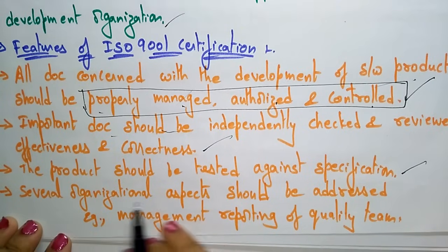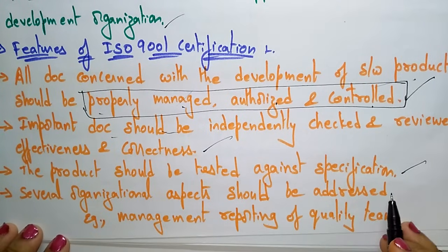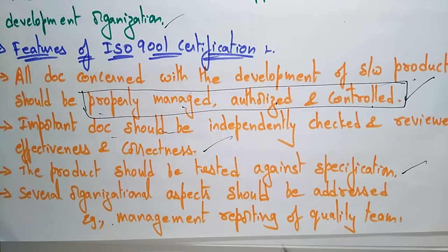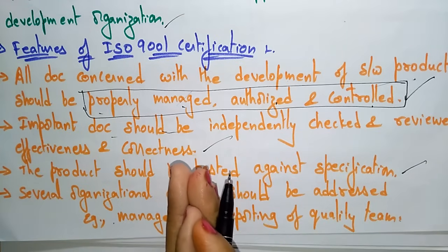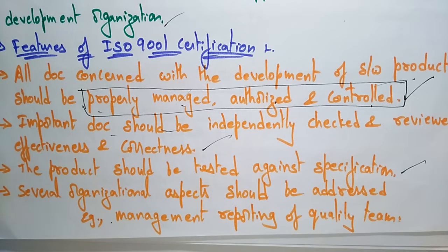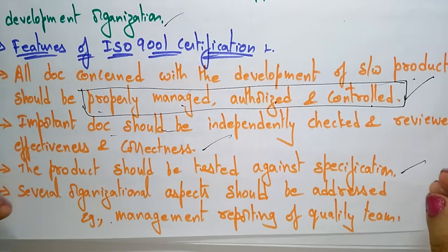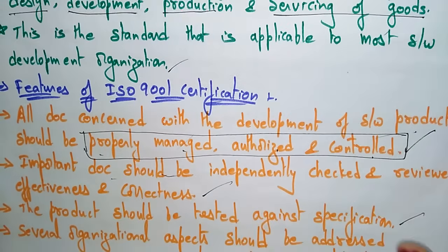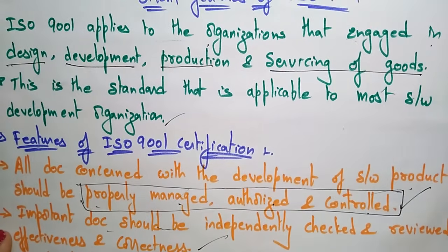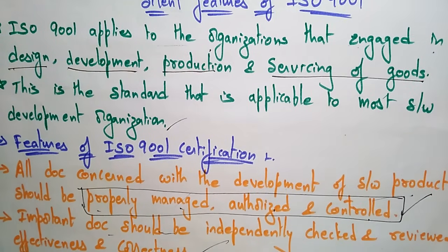Several organizational aspects should be addressed — for example, management reporting of quality teams. Different teams will be there: the development team, the production team, the testing team, and so on. Every organizational team has to be clearly addressed and coordinated, because developing a product is a teamwork effort. These are the features of ISO 9001 certification.